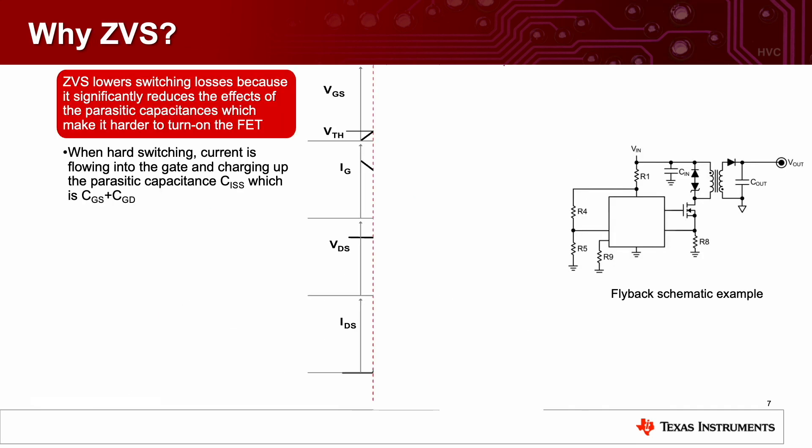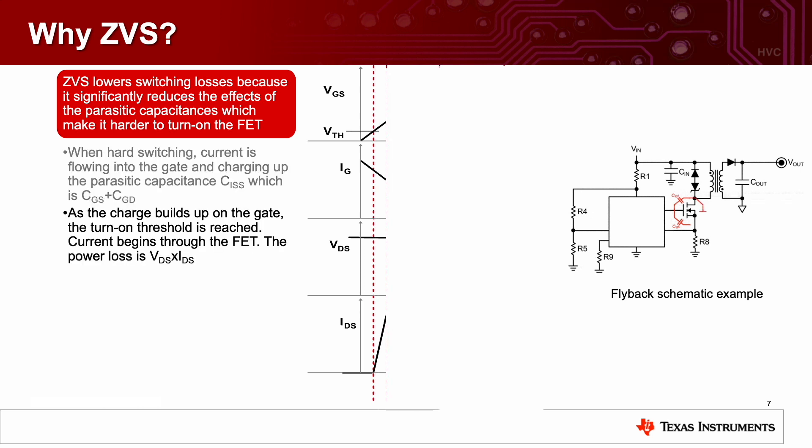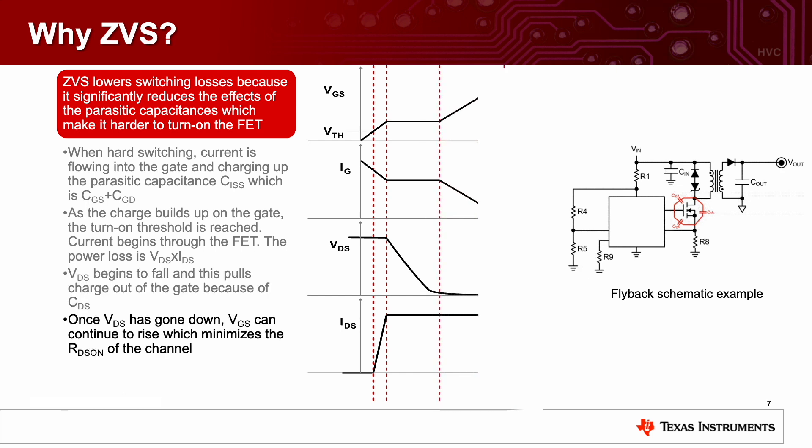Zero-voltage switching lowers switching losses because it significantly reduces the effects of the parasitic capacitances, which make it harder to turn on the FET. When hard switching, current is flowing into the gate and charging up the parasitic capacitance CISS, which is CGS plus CGD. As the charge builds up on the gate, the turn-on threshold is reached. Current begins to flow through the FET. The power loss is VDS times IDS. VDS begins to fall, and this pulls charge out of the gate because of CDS. Once VDS has fallen, CDS can no longer pull charge out of the gate. So now VGS can continue to rise, and this will continue to minimize the RDS on of the channel. The FET is now fully enhanced.